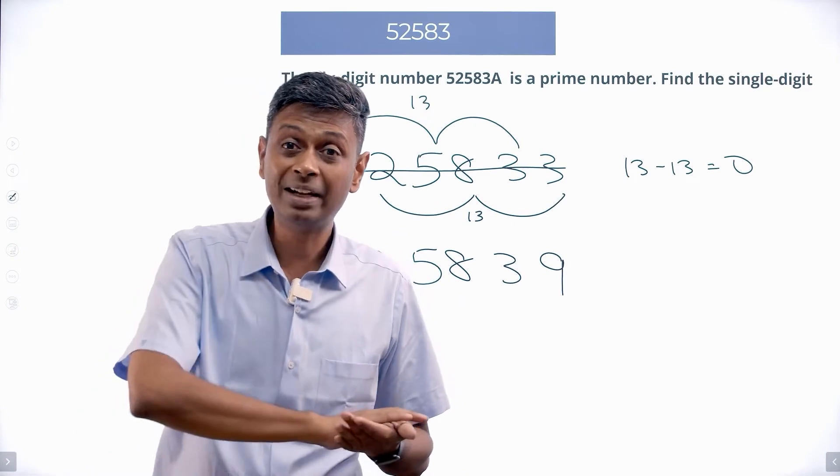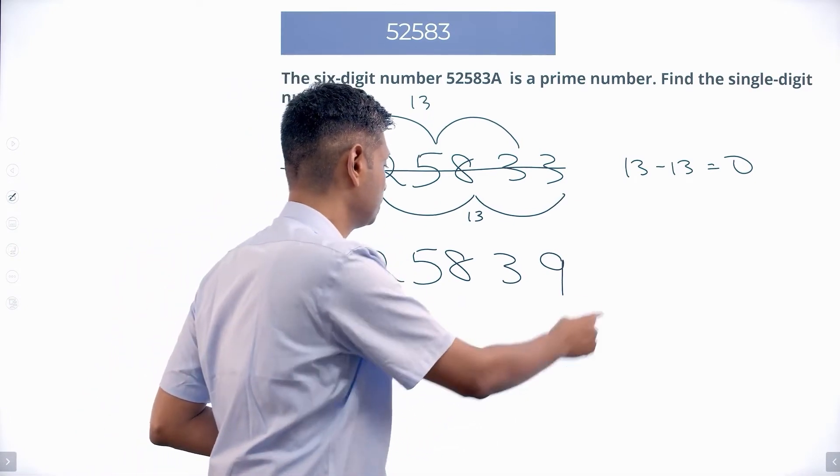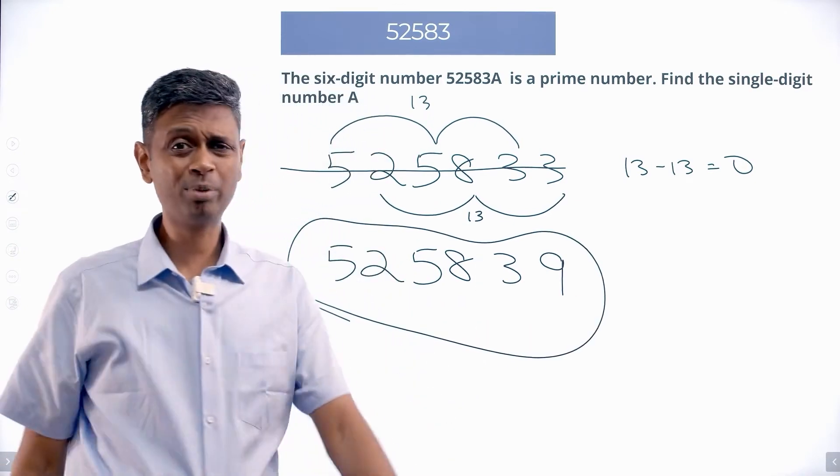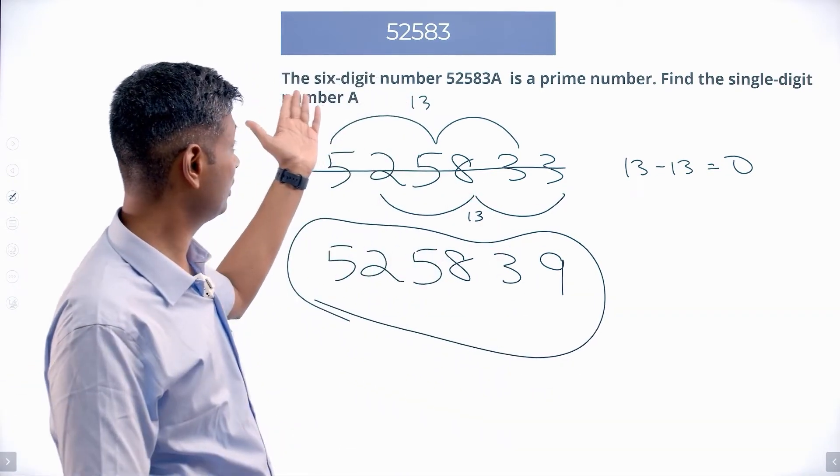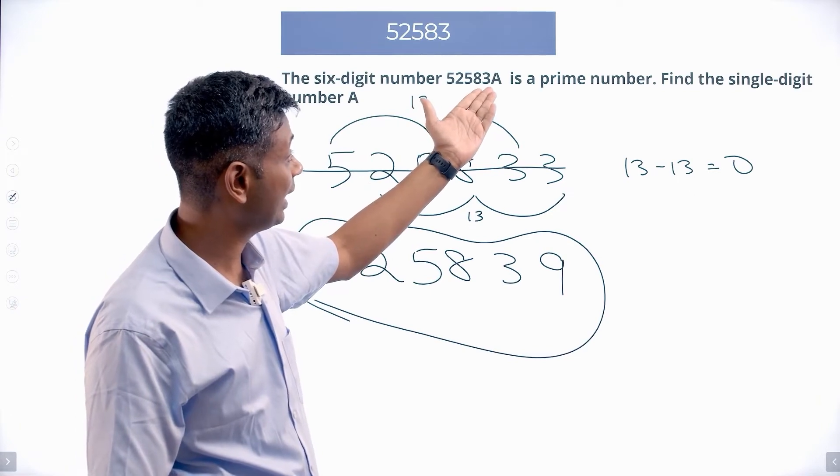That means I've eliminated everything except this. It is not my problem to worry whether this is prime. This will be prime because the question is saying so. Six digit number 52583A is a prime number.